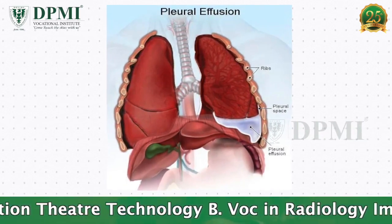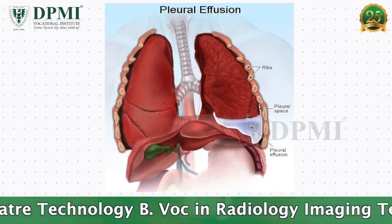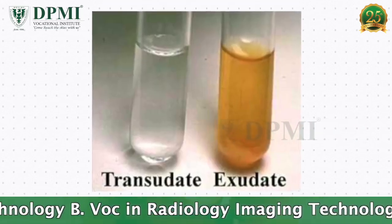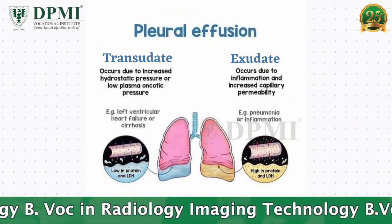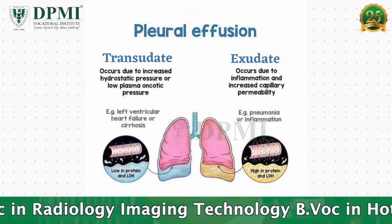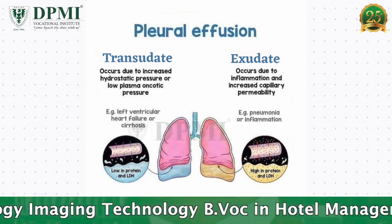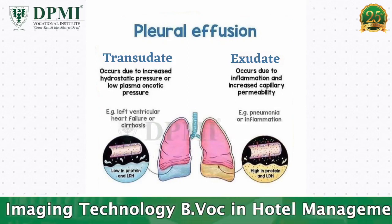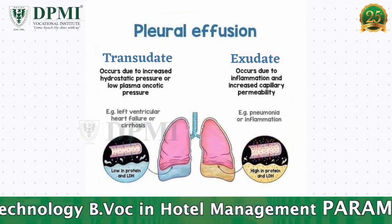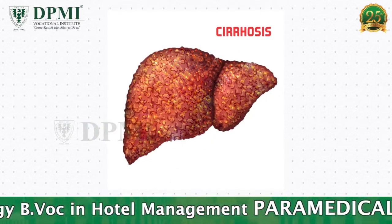Pleural fluid analysis is a group of tests that look for the cause of pleural effusion. There are two main types of pleural effusion. The first is transudate, which happens when there is an imbalance of pressure in certain blood vessels, causing extra fluid to leak into the pleural space. Transudate pleural effusion is most often caused by heart failure or cirrhosis.